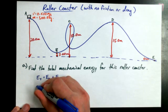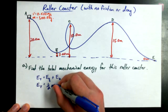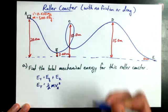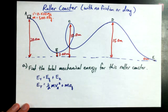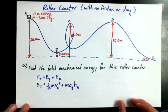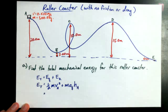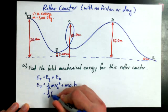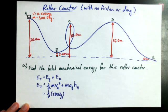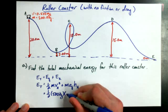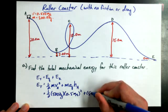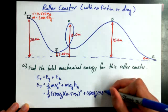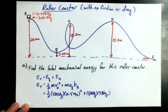So I can say E_total equals one-half m times v_A squared plus m times g times h_A. Plugging in values: one-half times 500 kg times (0.5 m/s) squared, plus 500 kg times 9.81 m/s² times 20 meters.